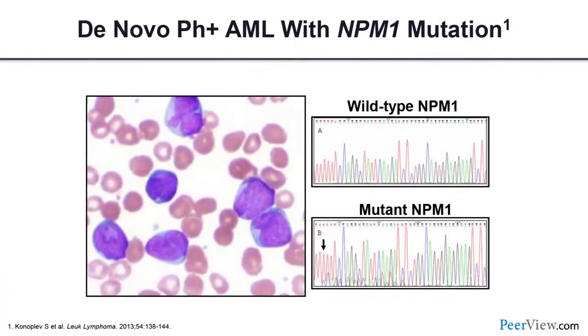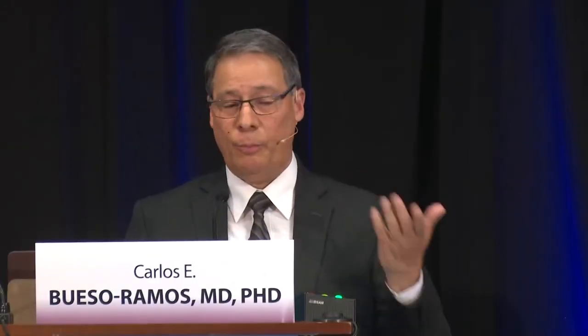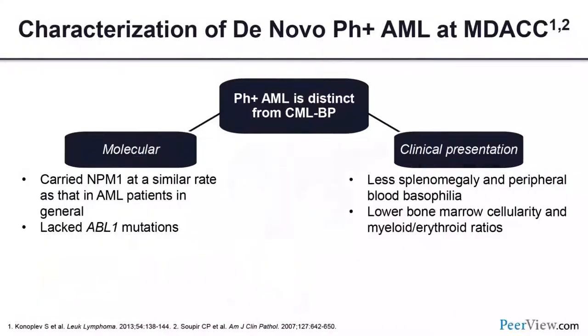A 22-year-old patient of Dr. Konopleva had morphology suggesting NPM1 mutation — and indeed she did. The surprise was that the case was also Ph-positive. She had no prior CML history, normal counts, no splenomegaly. The molecular pattern was more consistent with de novo AML — no ABL1 kinase domain mutations, no complex karyotype with clonal evolution typical of CML blast phase. The clinical presentation supported de novo AML: no peripheral blood basophilia and lower bone marrow cellularity with normal M:E ratio.